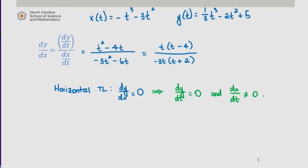Looking at dy/dx here, we see that dy/dx is 0 when this numerator is 0 and the denominator is not. dy/dt is 0 when t is 0 and t is 4. Now we also notice that the denominator, or dx/dt, is 0 when t is 0. So we don't have a horizontal tangent line there, but we do when t is 4.